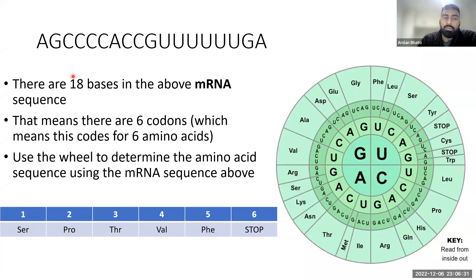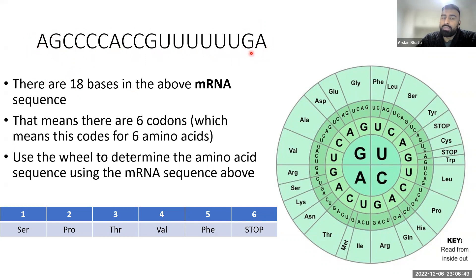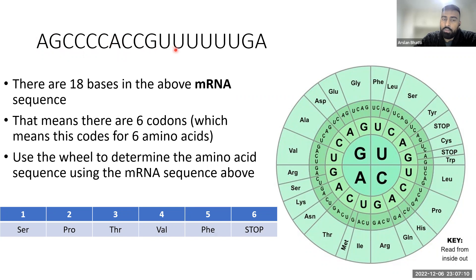Let's look at this mRNA base sequence - there are 18 bases, and we know it's mRNA because there are U's and not T's. Every three bases make something called a codon. So A, G, C is one codon; C, C, C is another codon; A, C, C is another codon; G, U, U; U, U, G; A - so you read it out in threes. There are six codons total, and each codon codes for one amino acid.